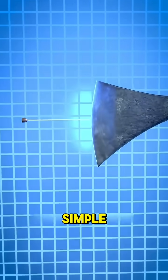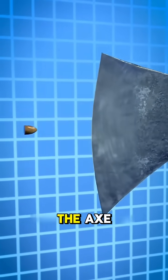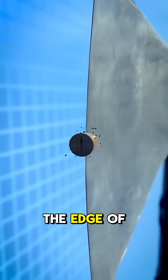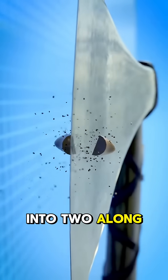But the fact is not that simple. If the bullet is aligned with the edge of the axe and the edge of the axe is sharp and hard enough, then the moment the bullet hits the edge of the axe, it may split into two along the center axis.